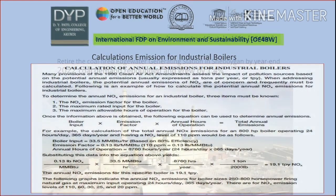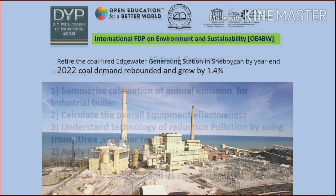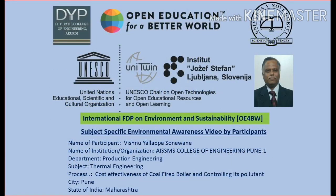One company is retiring due to high coal demand by 1.5% — this is one real-world example. The outcomes summarize the calculation of annual emissions for industrial boilers, calculating the overall effectiveness of these boilers, and applying the knowledge of national ambient air quality standards. Thank you — I am showing the cost effectiveness of coal fired boilers.